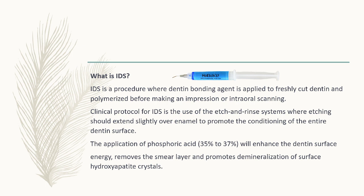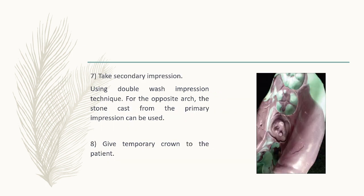The clinical protocol for IDS uses the etch-and-rinse system where etching should extend slightly over enamel to condition the entire dentin surface. Phosphoric acid 35–37% is applied to enhance the dentin surface energy, remove the smear layer, and promote demineralization of surface hydroxyapatite crystals. After that, we take the secondary impression using a double-wash impression technique with additional silicone putty and light body. For the opposing arch, the stone cast from the primary impression can be used. Then we temporize the tooth using a temporary crown.